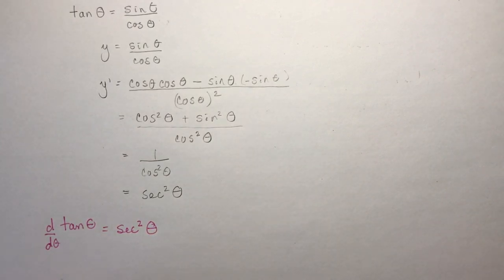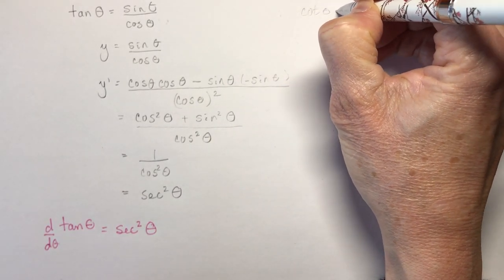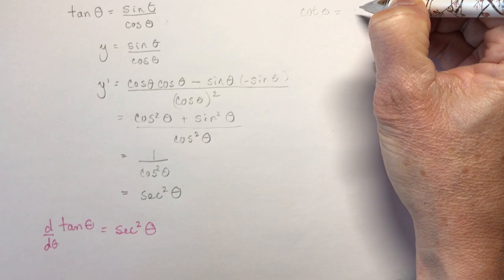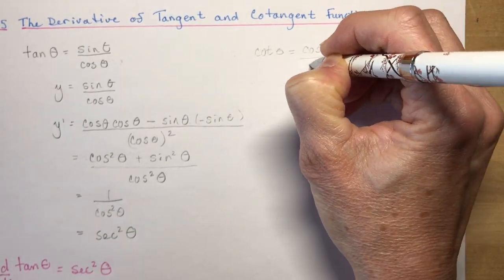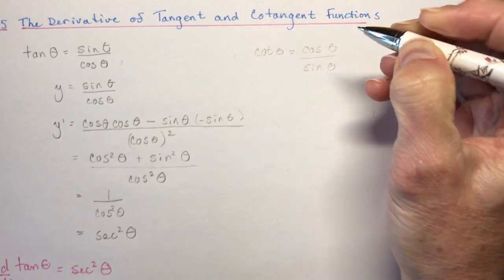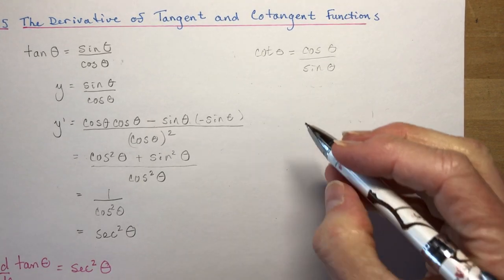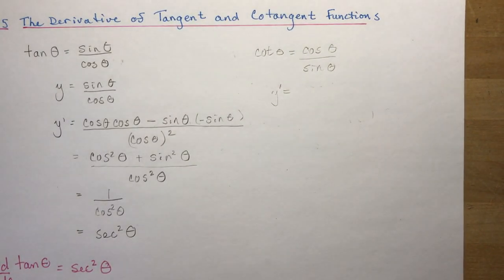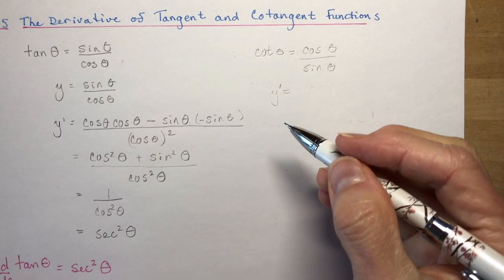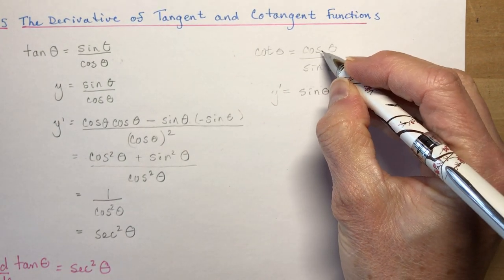Now let's look at the derivative of cotangent. Cotangent θ is just the other way around — we have cos θ over sin θ. We'll let y equal cos θ over sin θ and take the derivative using the quotient rule.